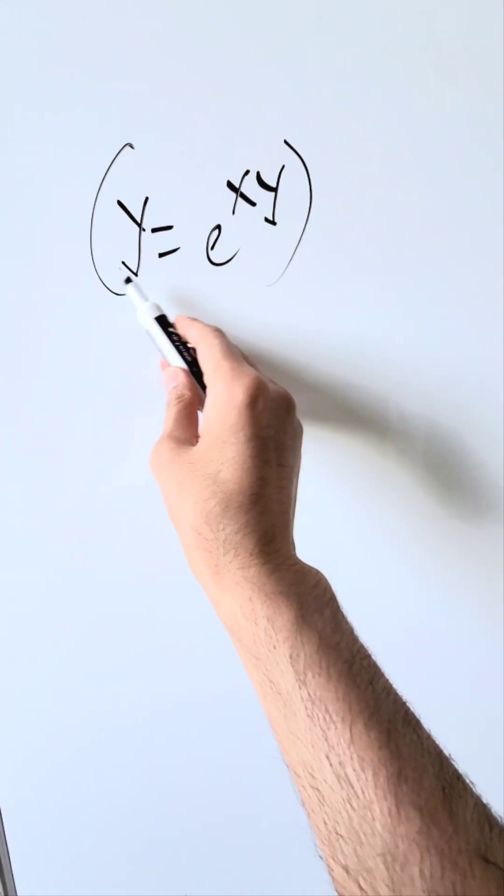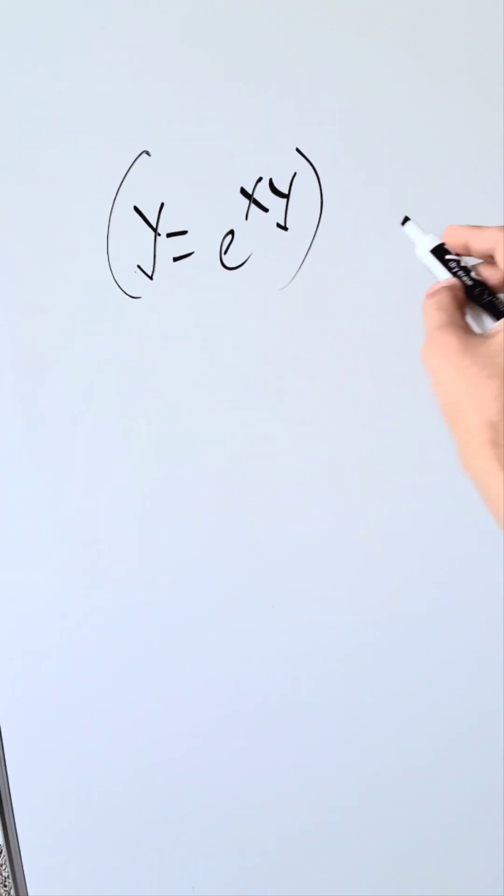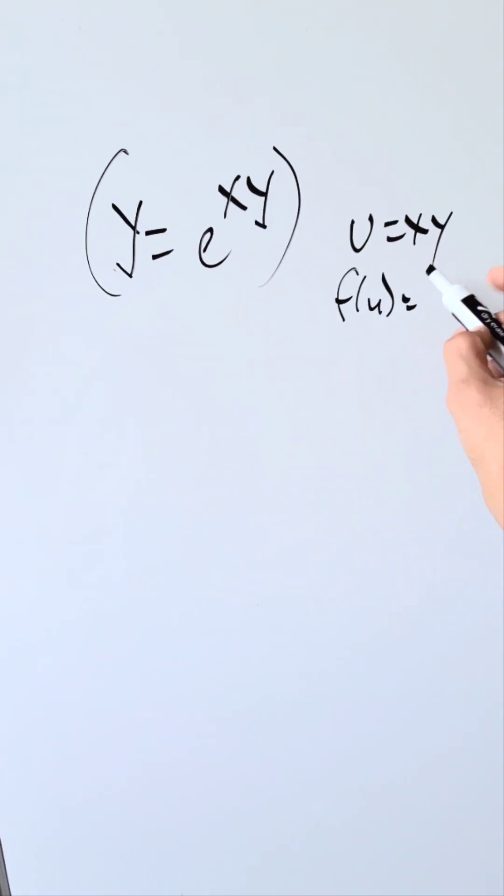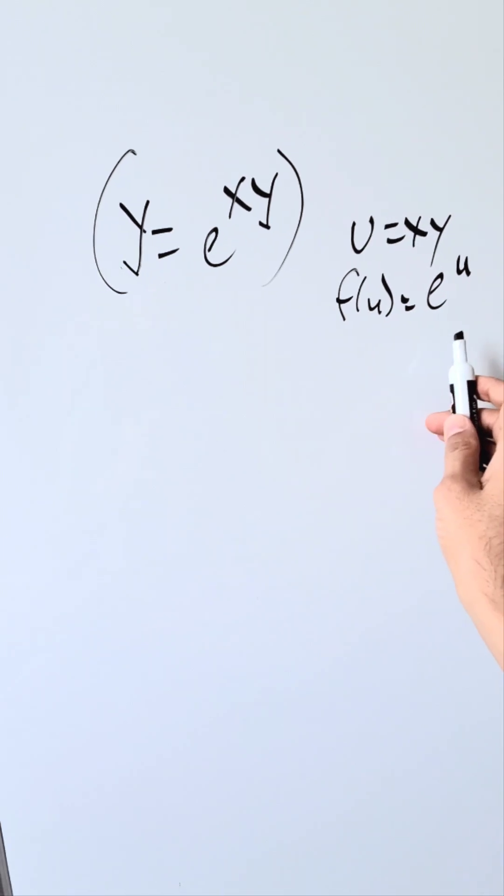We will do implicit differentiation of this entire item and we'll do a u substitution. u is equal to xy, then your function or your item with regards to that is equal to e to the u, and that will start your process.